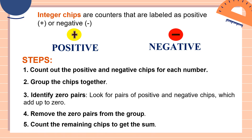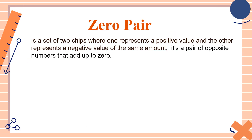And the last step — step five: count the remaining chips to get the sum. Don't worry, because we will be explaining this one step by step. It's very easy to add integers using integer chips. Now let's talk about zero pair. A zero pair is a set of two chips where one represents a positive value and the other represents a negative value of the same amount — a pair of opposite numbers that add up to zero.